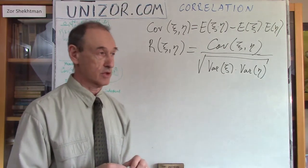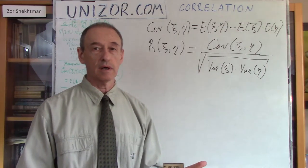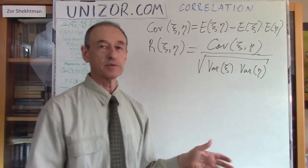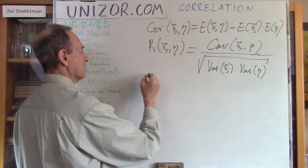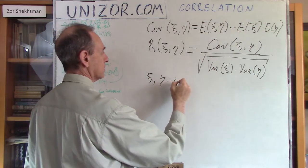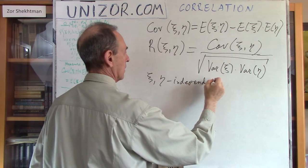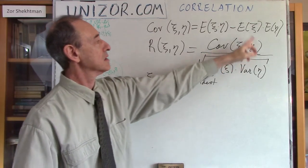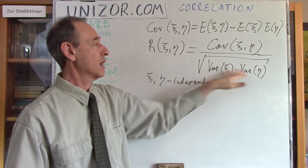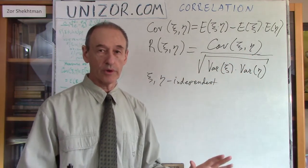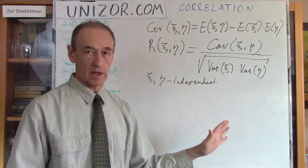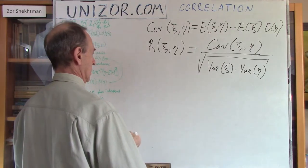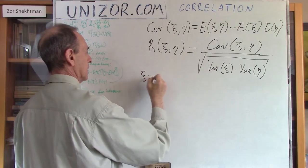Let me exemplify this in all the cases considered. Case one: when variables are independent. If they are independent, the covariance equals zero, so the whole correlation is zero. Independent variables have zero correlation. That's good.